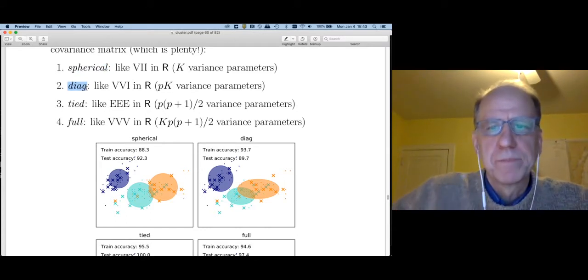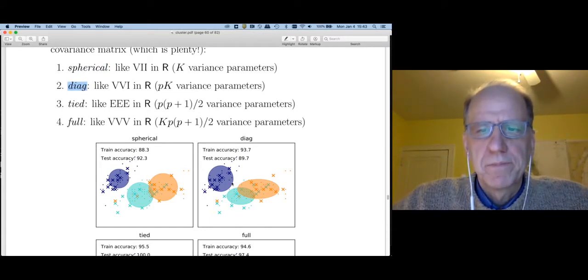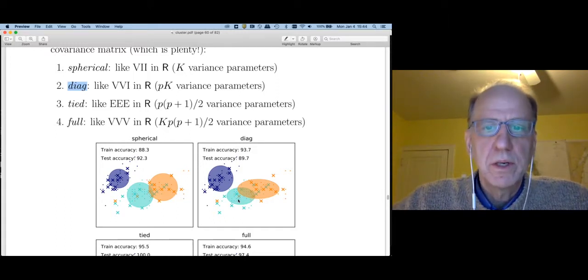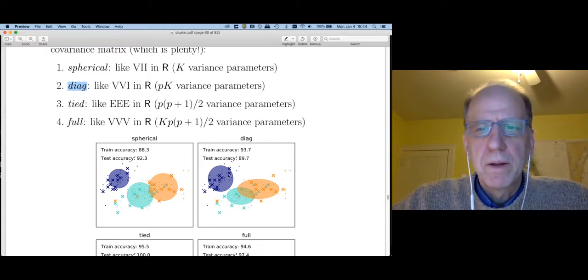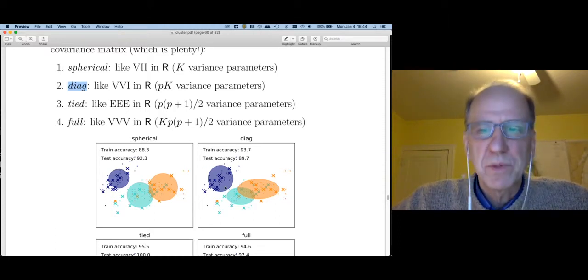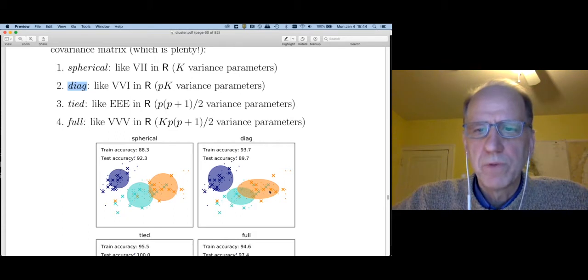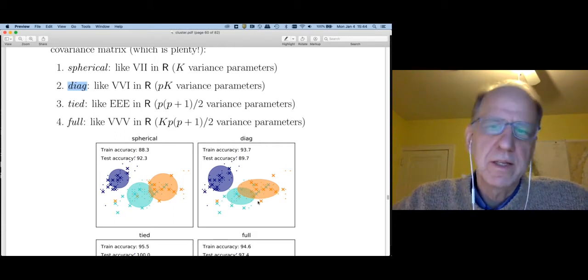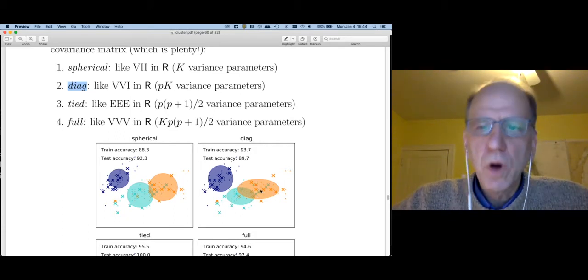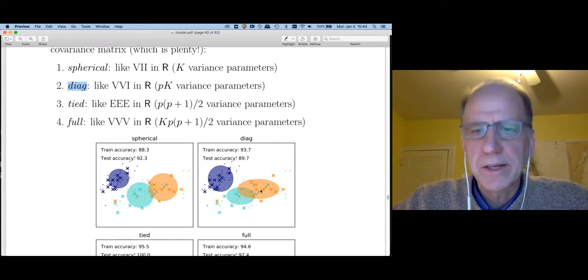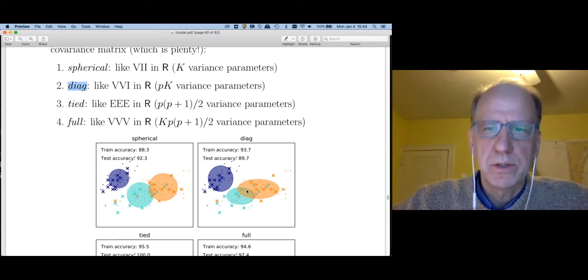What I'd like to point out is that if you have k clusters, you're going to only have k variance parameters to estimate. That grows very modestly. The diag option looks like this. Each cluster can have a different set of variances in both directions, but the clusters are aligned with the coordinate axes. So it looks like cluster one is perfectly round up here. The orange cluster has more variance in the x1 direction than in the x2 direction, but there's no within cluster correlation, likewise with the light blue cluster.